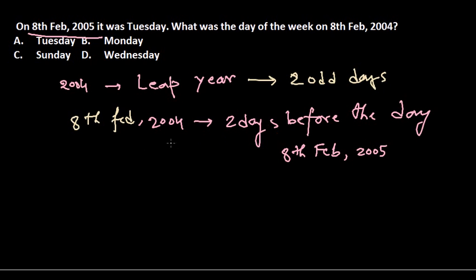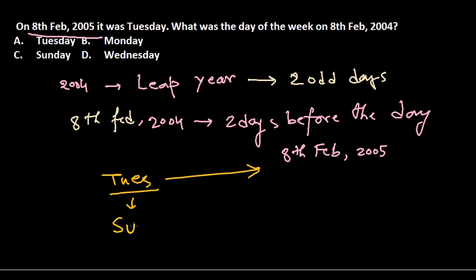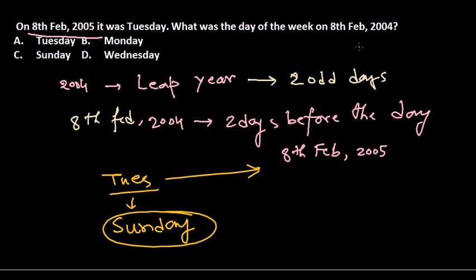The day on 8th February 2005 is Tuesday, so two days before Tuesday is Sunday. Therefore, 8th February 2004 is a Sunday. Option C is the correct answer.